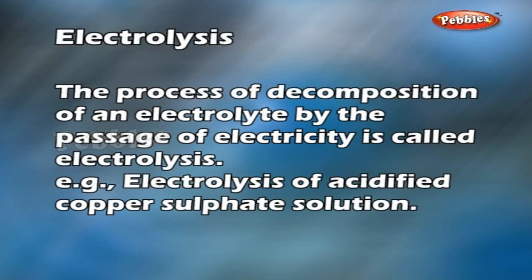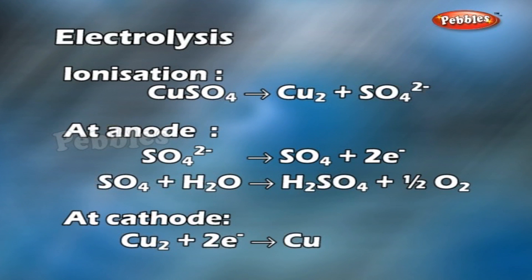Electrolysis of acidified copper sulphate solution. Ionization: CuSO4 gives Cu²⁺ and SO4²⁻ ions.